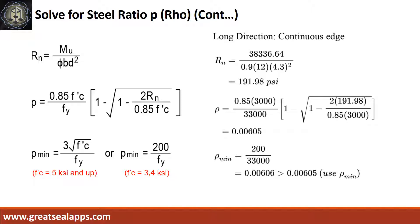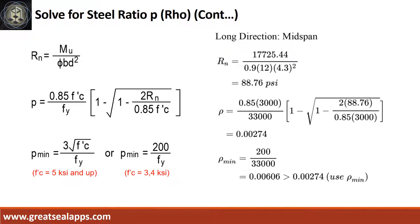Given long direction, continuous edge moment equals 38,336.64 inch-pounds. Resistance factor equals 0.9, b equals 12, d equals 4.3. Beam design ratio RN equals 191.98 PSI, reinforcement ratio rho equals 0.00605. Use rho minimum of 0.00606. Mid-span moment equals 17,725.44 inch-pounds. RN equals 88.76 PSI, rho equals 0.00274. Use rho minimum of 0.00606.